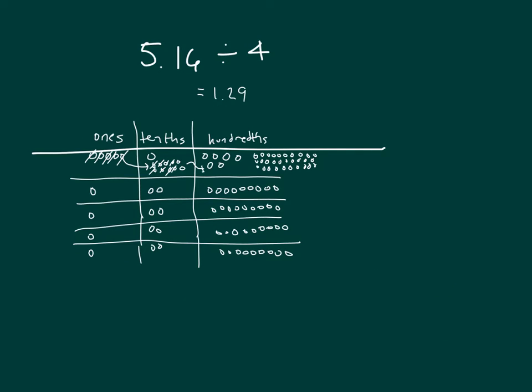Here's our written work. 4 goes into 5 one whole time. 1 times 4 is 4. 5 minus 4 is 1. Bring down the 1. 11 divided by 4 is 2. 2 times 4 is 8. 11 minus 8 is 3. And I bring down the 6. 36 divided by 4 is 9. And our answer is 1.29.